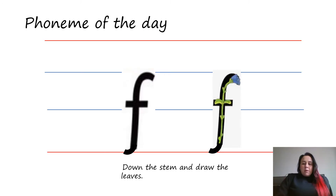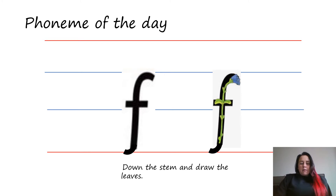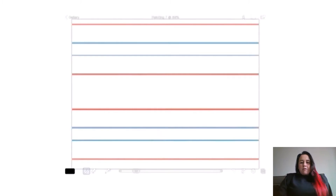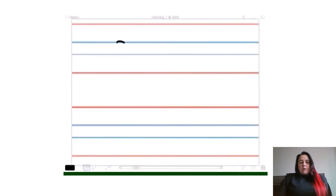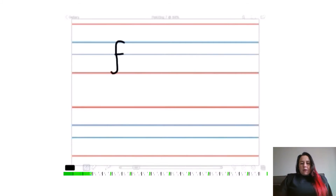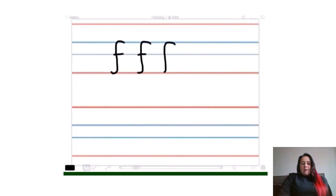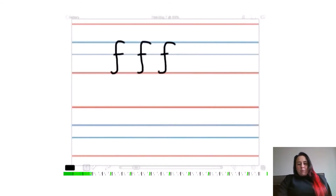Now remember our phoneme that we're learning is F. Remember it can be a short or a long sound that we find at the end of words. When we write it as a grapheme, remember it's a descender so it goes down to the bottom red line. The rhyme when we write F is: down the stem and draw the leaves. We start at the top blue line and we go down the stem to the bottom red line and then we draw the leaves. Our descending F. Well done.